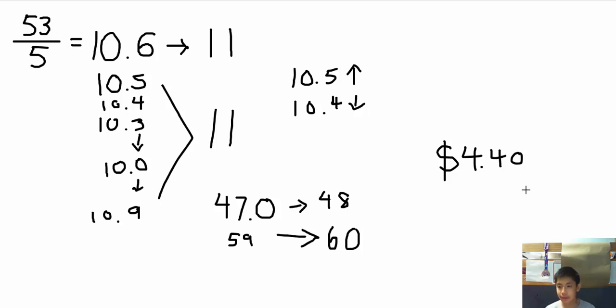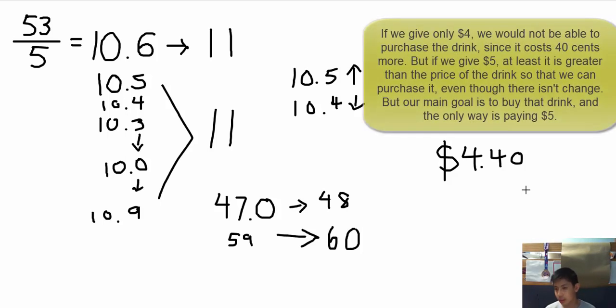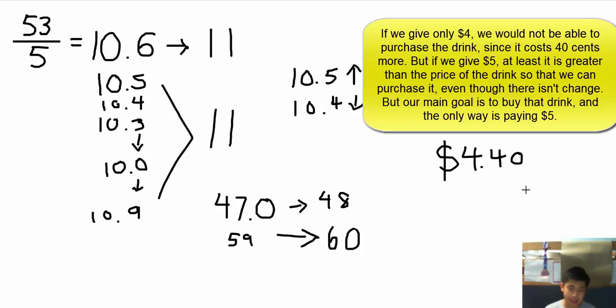Because if you give five of them, you won't get change back. But if you give four of them, you're not paying enough. So in this scenario, we need the drink, right? So we would give all five of our $1 bills to the cashier so that at least we pay more than the price of the drink. If we pay less, the cashier wouldn't sell it to us since they're not making a profit and they're losing $0.40.